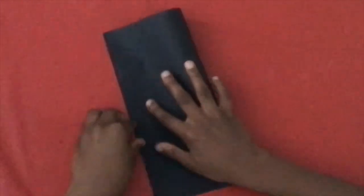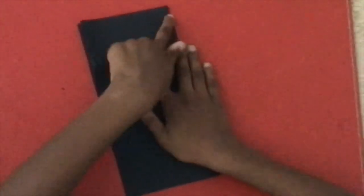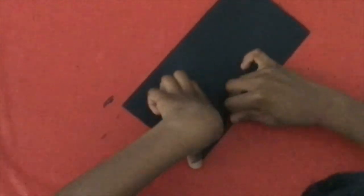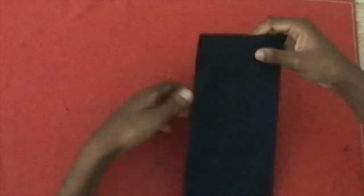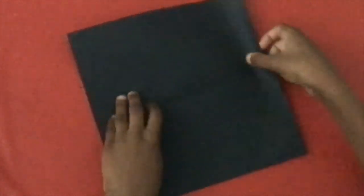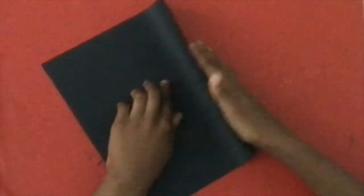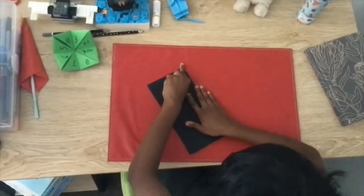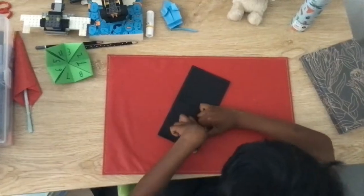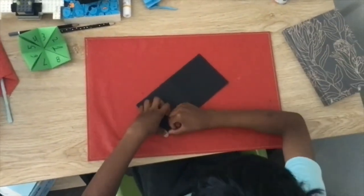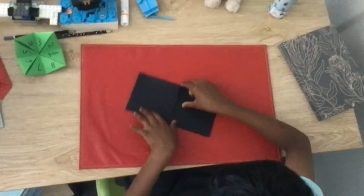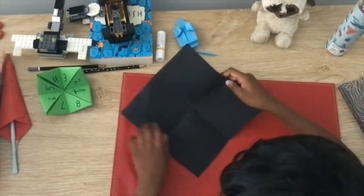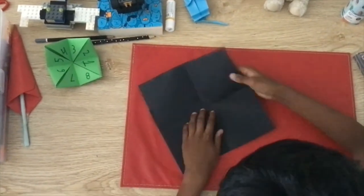To start, we're going to fold it in half. Now unfold and fold it in half again. I kind of did it a little wrong but actually it doesn't really matter because once you do that there's already a crease mark so you don't have to.